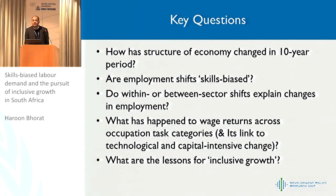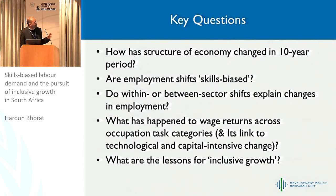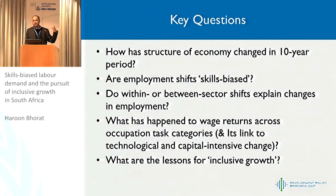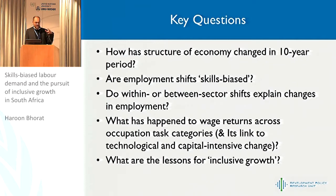So we start with a three-part paper in search of some unity, which is not quite there yet. The three parts involve: a descriptive overview, particularly looking at the changing structure of the economy in terms of employment shares by sector and skill; then we use a decomposition technique to ask whether these shifts have been skills-biased and whether within- or between-sector shifts explain those changes — the standard Katz and Murphy decomposition. And then we go one step further and link up to the Autor literature, which has switched to a task-based measure.